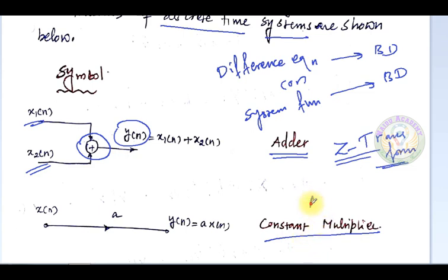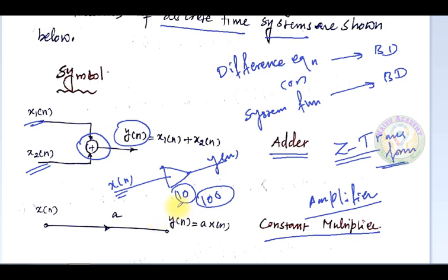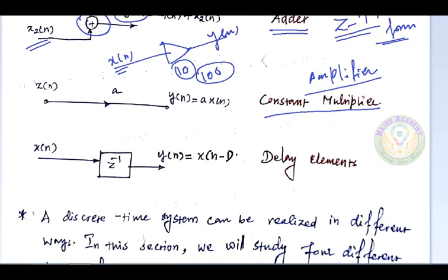A multiplier, also called an amplifier, can be represented with an amplifier symbol. Here x(n) is the input and y(n) is the output, where a constant value — for example 10 or 100 — is multiplied with the original signal. So a constant multiplier is another important component of block diagram representation.